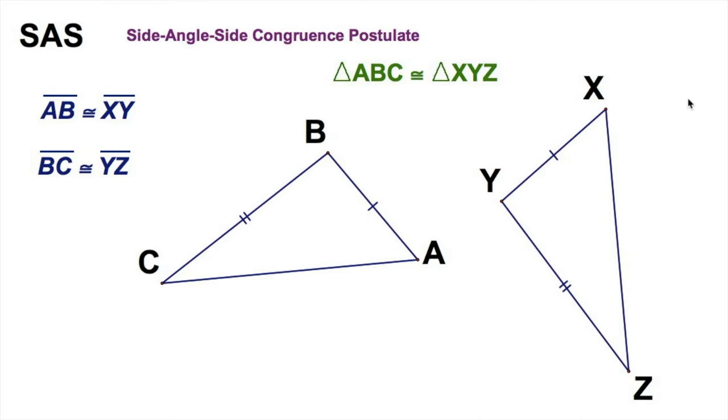And then this is the thing. We need an angle congruent, but it's got to be the included angle. That is the angle that's in between the two pairs of known sides, angles B and Y. So right there. And this is an example of the side angle side congruent postulate. So go ahead and mark your notes.